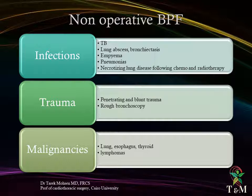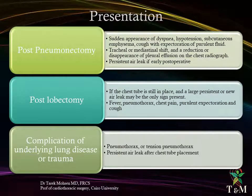Non-operative bronchopleural fistula can follow infections including tuberculosis, lung abscess, empyema, pneumonia, and necrotizing lung disease. Trauma — whether penetrating or during rough bronchoscopies — and malignancies from the lung, esophagus, thyroid, and lymphomas are also causes. In post-pneumonectomy cases, presentation includes sudden appearance of shortness of breath, hypotension, and subcutaneous emphysema.